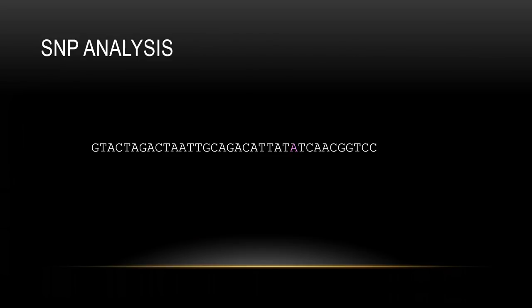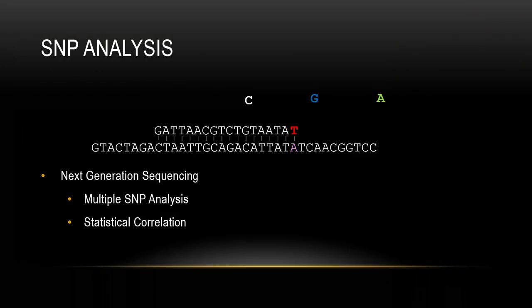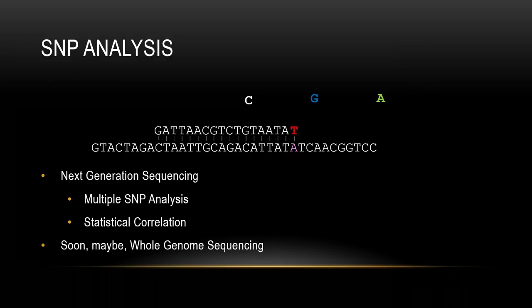SNP analysis is done by checking for a known sequence using labeled bases to identify which base binds at a position. This can be done by next generation sequencing — a quick, novel technique for sequencing DNA. You can check for several SNPs at once, which is quite fast, and it gives a statistical correlation of which person has which SNPs. Soon, whole genome sequencing may allow checking all mutated bases at once.